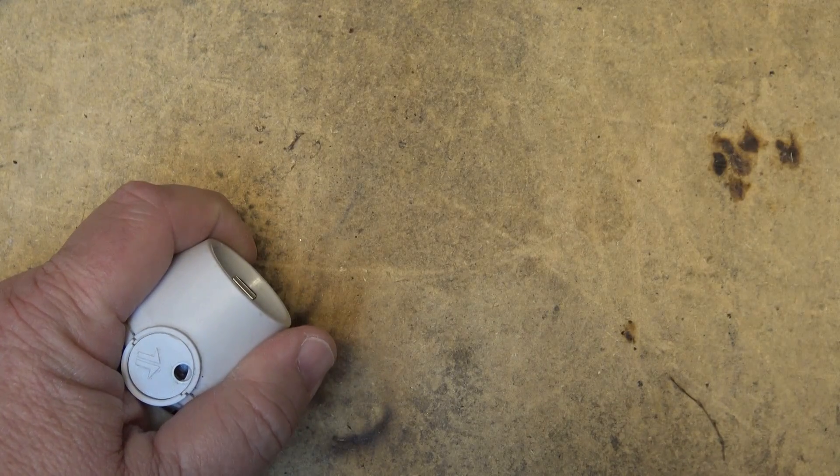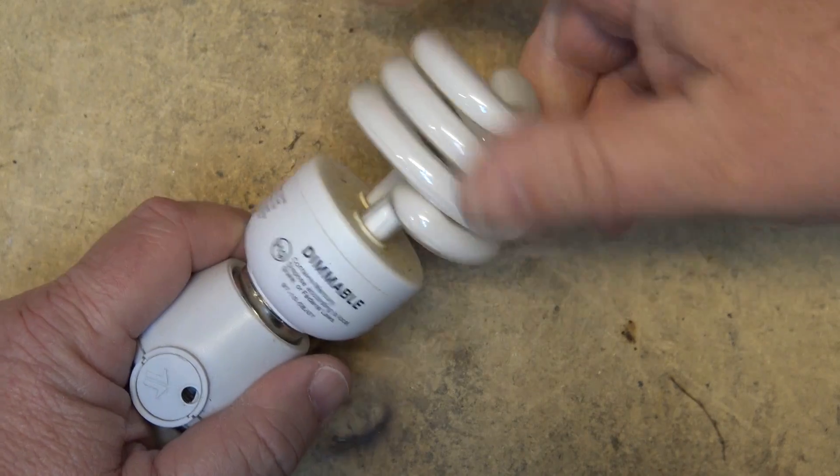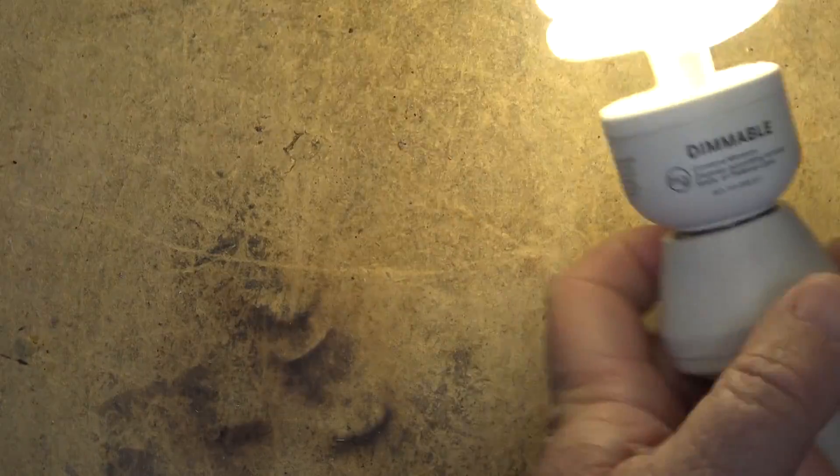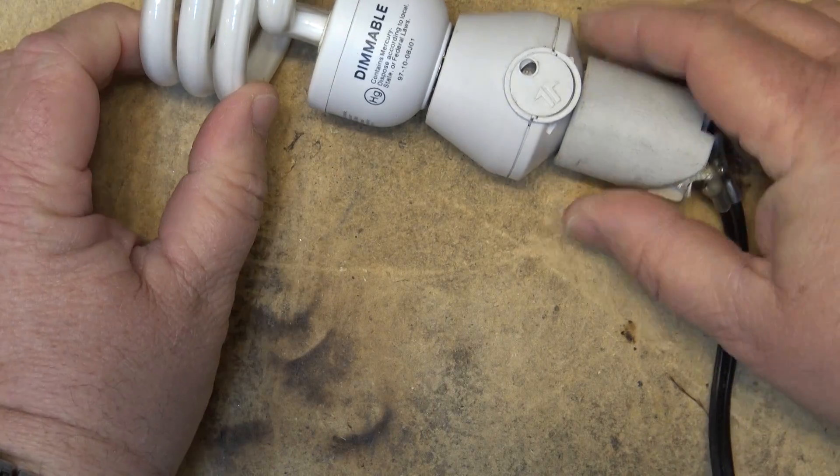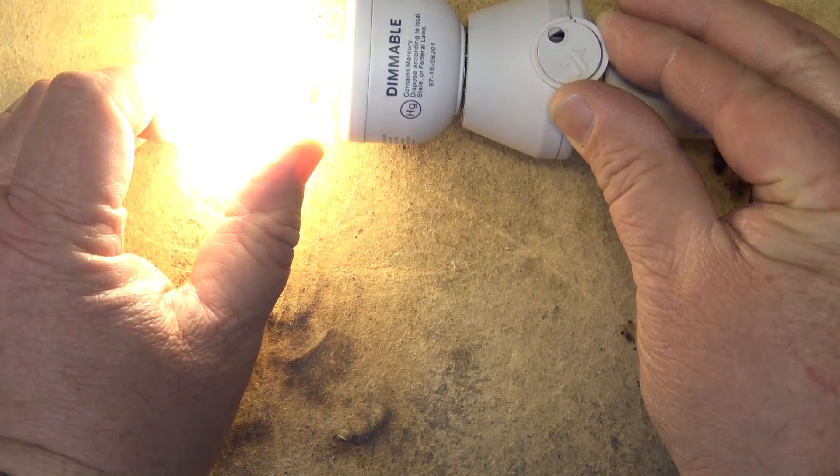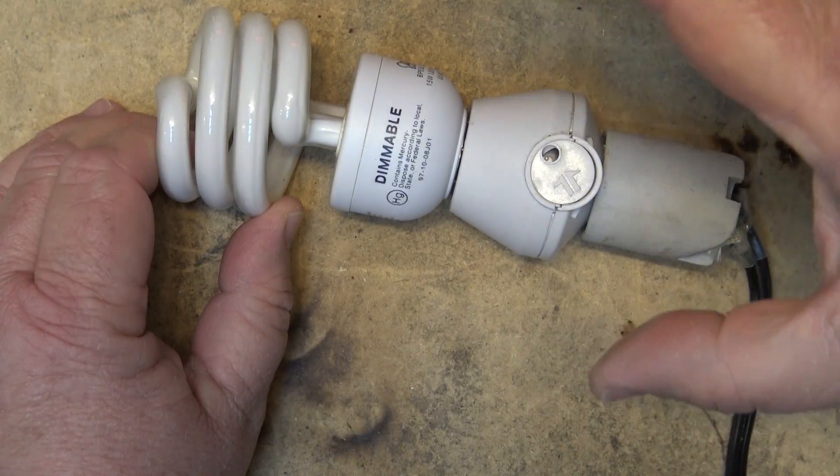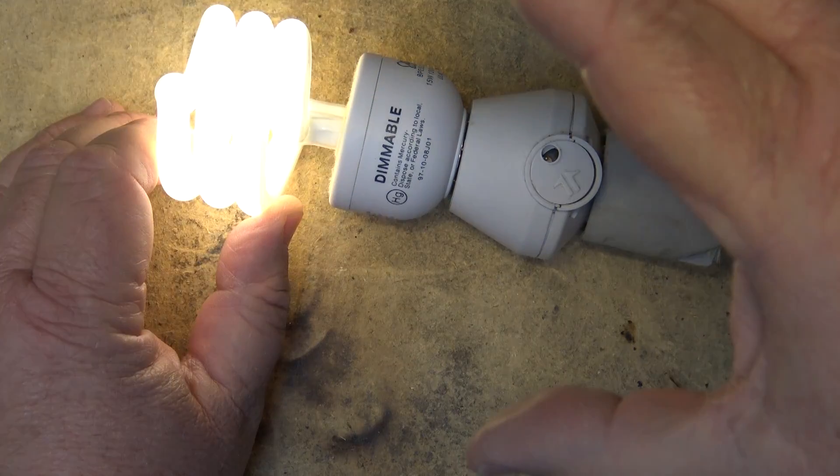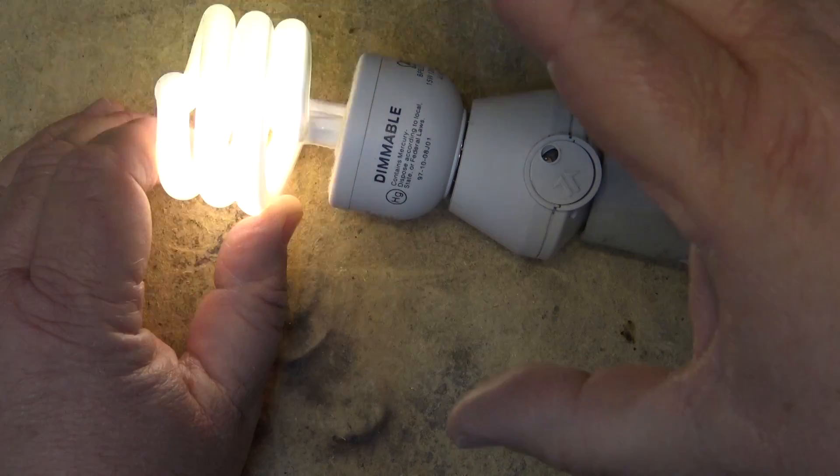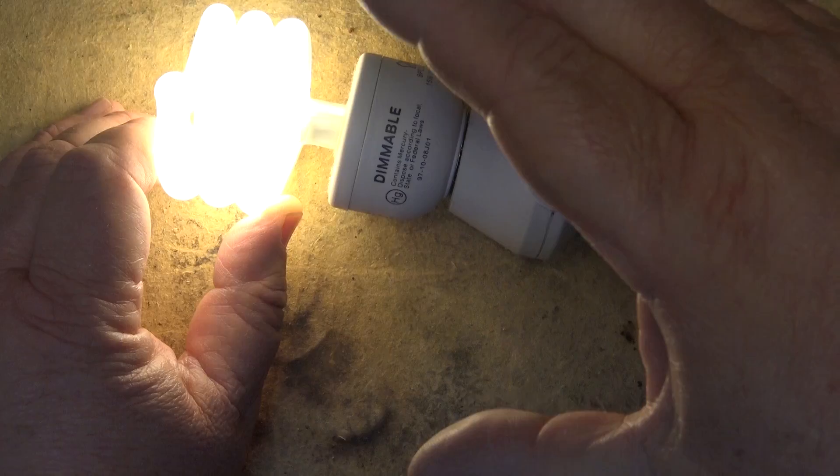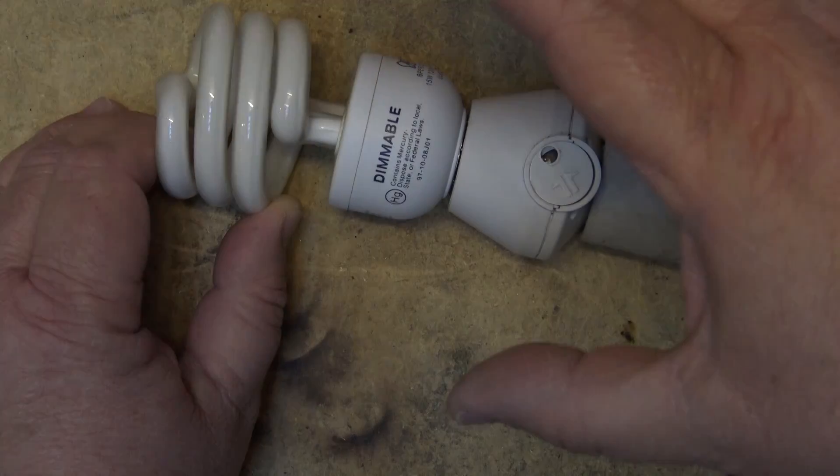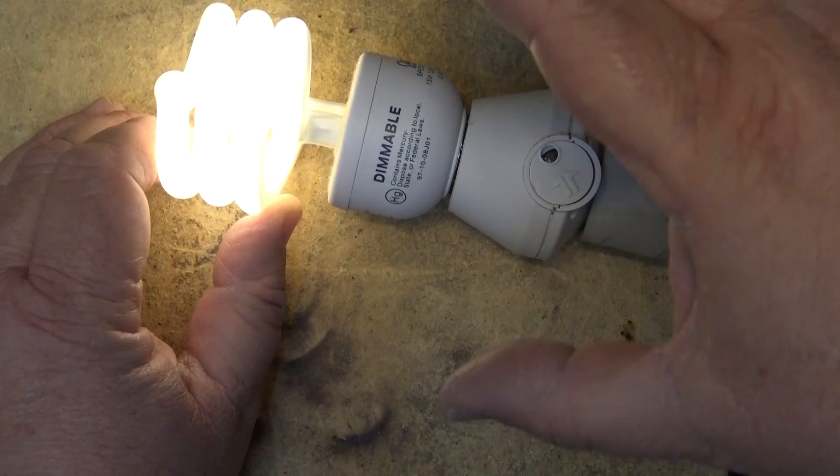Let's try with a dimmable CFL bulb and see whether this one will work. As it starts to get dark, this one actually will work sort of - not really, it will flicker. You can't use that one either. Works better than the non-dimmable but it would start to flicker like crazy, so that's a fail.